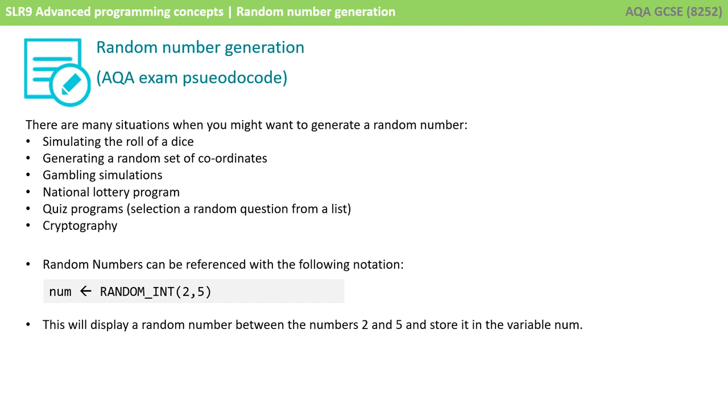RANDOM_INT in capital letters. They'll then open the brackets and have two parameters. They are the range of numbers that will be generated. So here it would generate a random number between 2 and 5 inclusively, and then you obviously need to assign or store that result somewhere to a variable on the left.